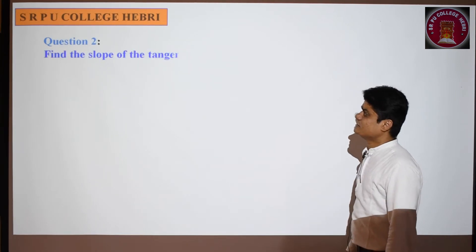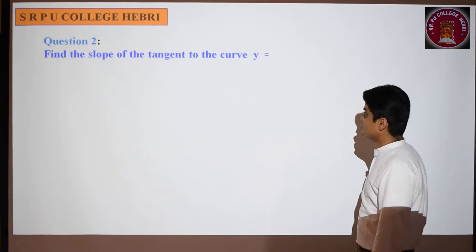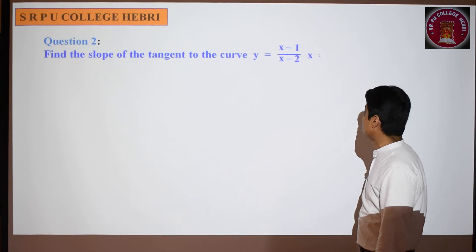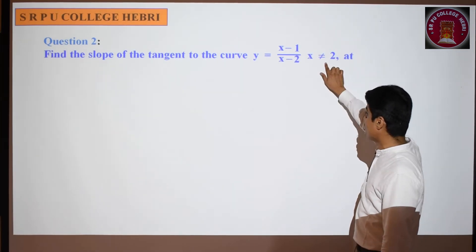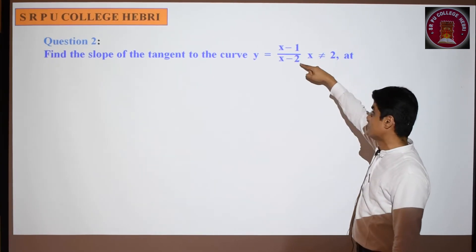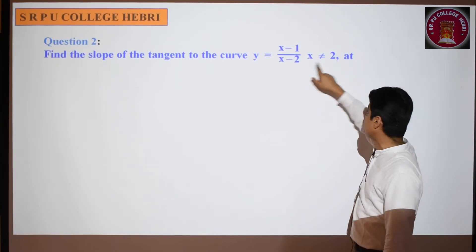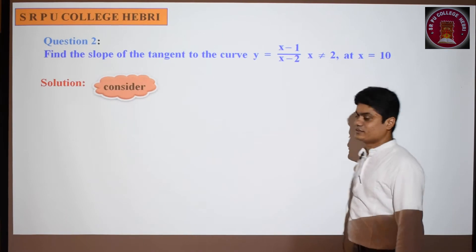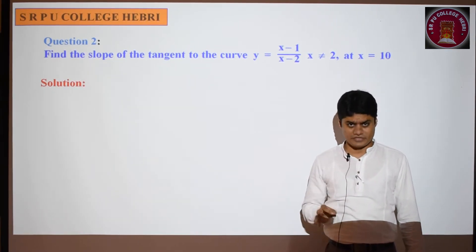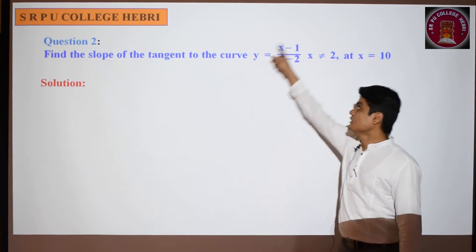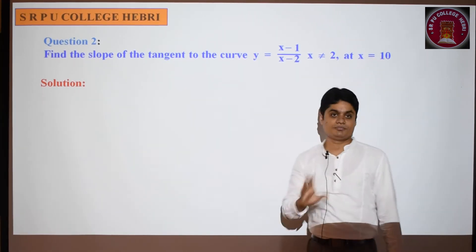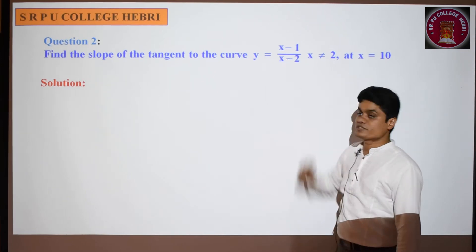Question number 2: find the slope of the tangent to the curve y = (x - 1)/(x - 2). Note that x should not be equal to 2 because when x = 2 the denominator becomes 0 and the function is not defined. We need to find the slope at x = 10. The concept and procedure are the same as the previous two problems — differentiate and then substitute x = 10.